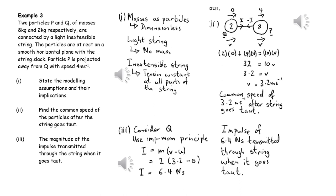By considering Q, we can use the fact that impulses change momentum. The impulse is acting away from Q towards P, so that's the direction we take as positive, and therefore we can work out the impulse in the string.